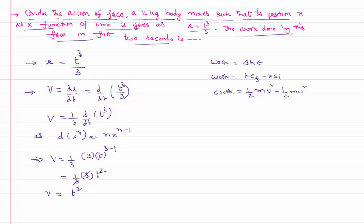Now once if you know velocity is varying with respect to t square, I want to calculate the work done between 0 and 2 seconds. At t equal to 0, initial velocity u is equal to t square, that is nothing but 0 square, that is equal to 0. At t equal to 2 seconds,